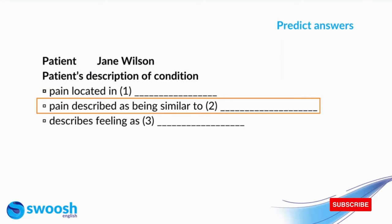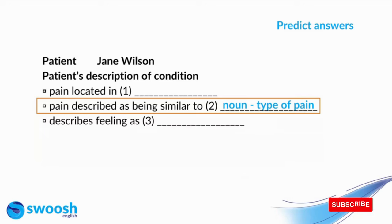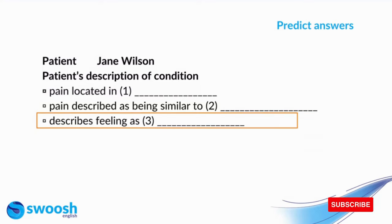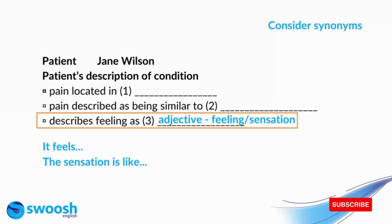Moving on to the second example — 'pain described as being similar to' — once again, most likely going to be a noun, and we're listening for a description of the pain. Thinking about synonyms, the patient might say 'it's like' or 'it feels like.' Moving on to number three, 'describes feeling as something' — we know it's going to be an adjective, and we're listening for most likely a feeling or sensation. The patient might say 'it feels' or 'the sensation is like.' So that's our strategy: look at each gap, think about the type of word, then think of synonyms for how you might hear it in the audio.